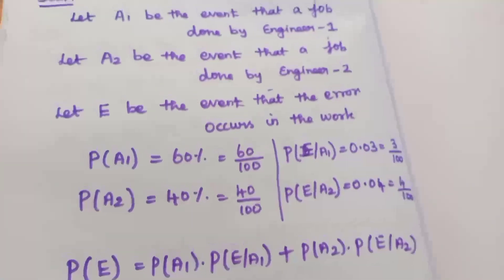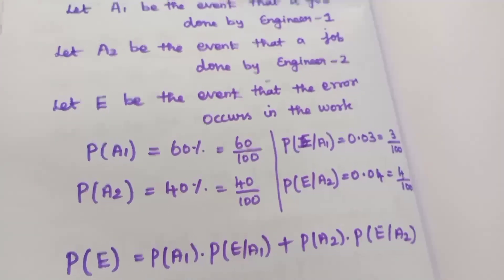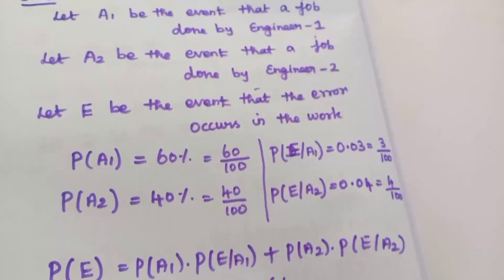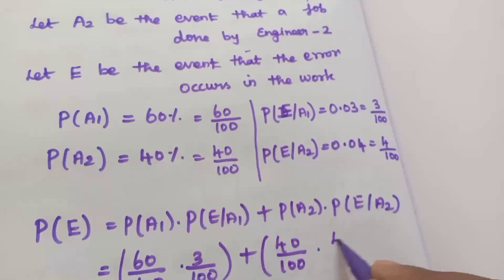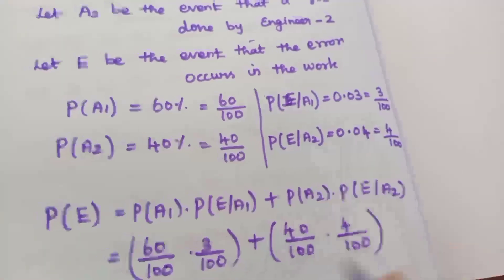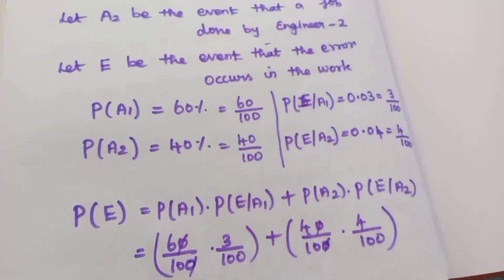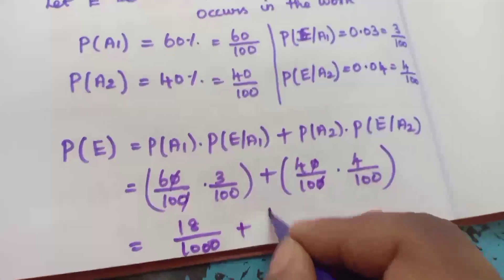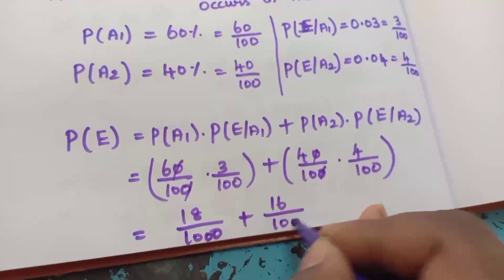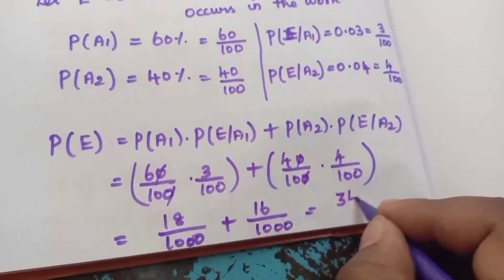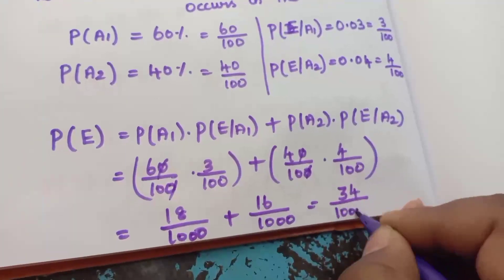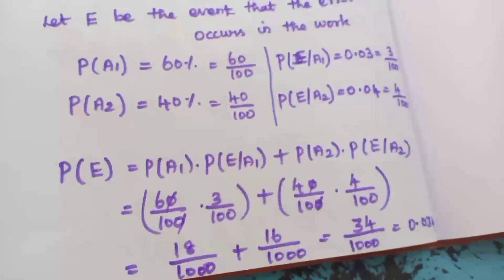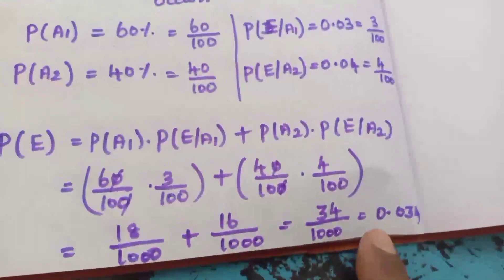Substituting the values: 60/100 times 3/100, plus 40/100 times 4/100. The zeros cancel, giving 18/1000 plus 16/1000, which equals 34/1000. So the total probability of error, P(E), is equal to 0.034.